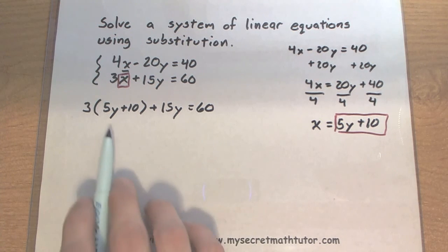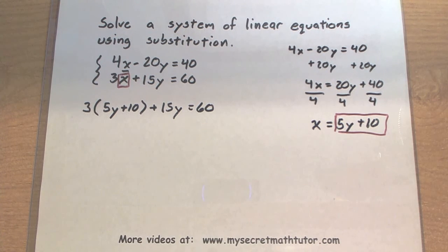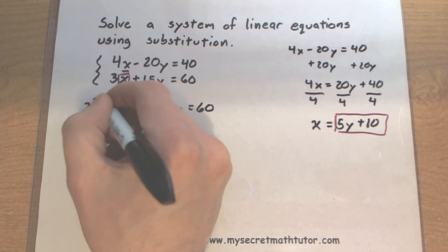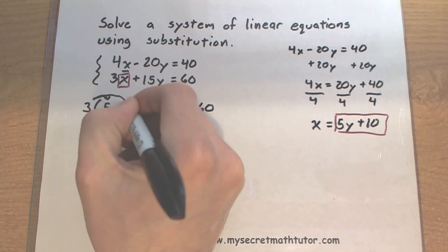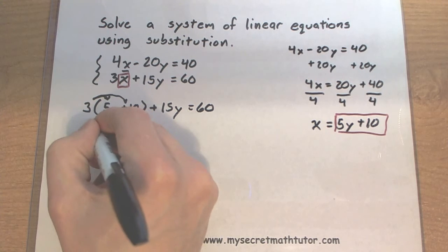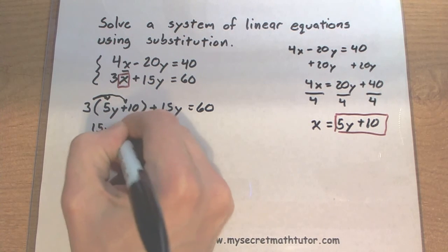This equation is really nice. It only has y's in it, so I'm going to go ahead and solve it for y. Looks like I'll need to use my distributive property here. Get a 15y plus 30.